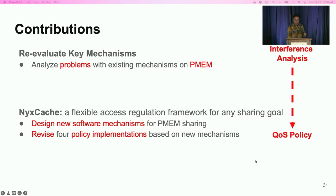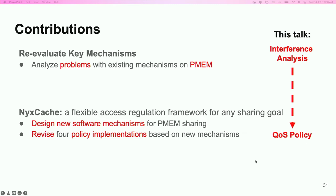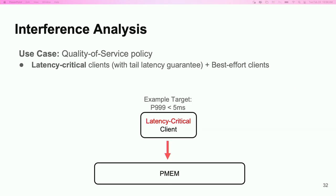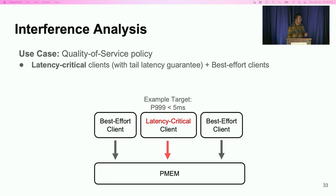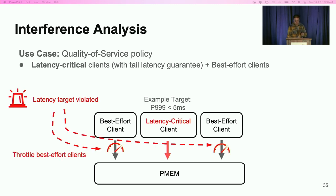In the following, we will look at one case study of the interference analysis mechanism and the related quality of service policy. We demonstrate the use of the interference analysis mechanism in a quality of service policy setup. There are latency-critical clients and best-effort clients sharing the system. Whenever a latency-critical client's performance target is not met, to save those latency-critical clients, we must throttle some best-effort clients.